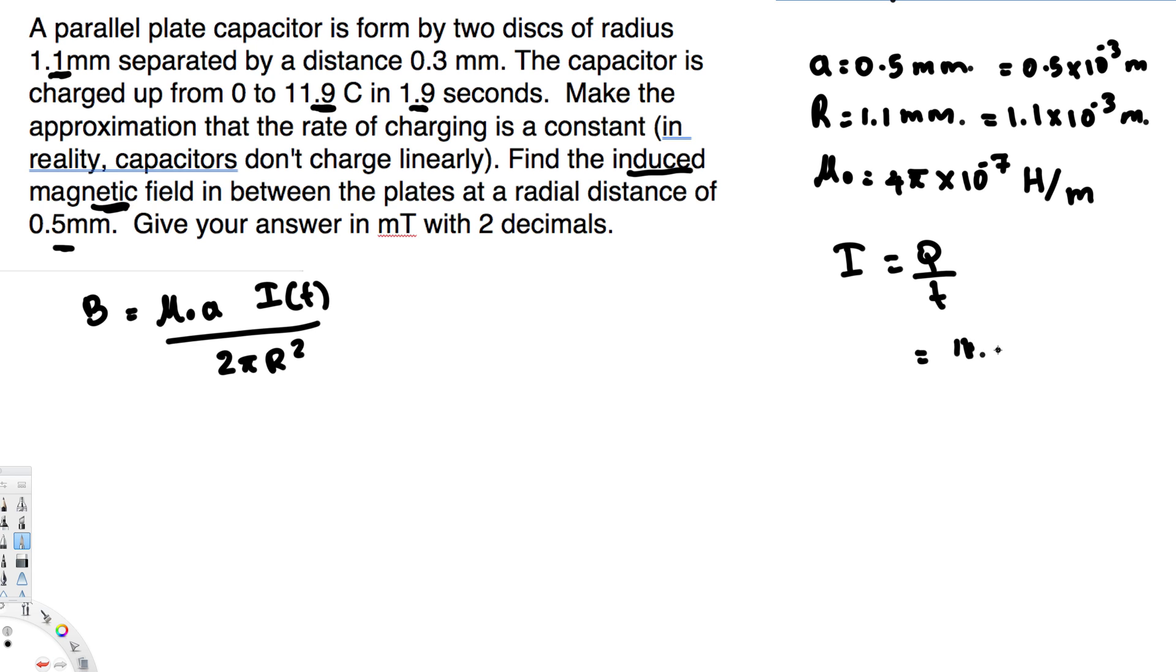So 11.9 divided by 1.9 second is going to be the charge because 11.9 minus 0 is not going to change anything. So 11.9 over 1.9 is going to be the current. Now let's go ahead and plug the values in this equation and see what we get.